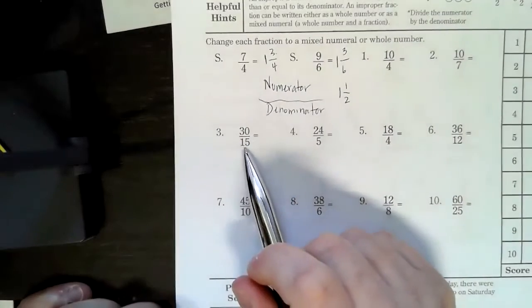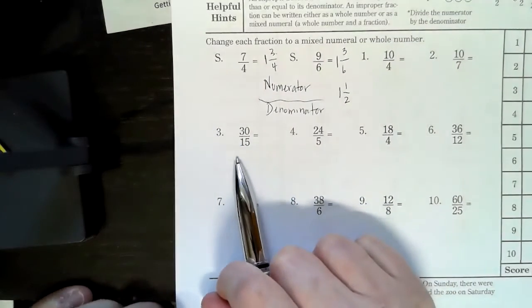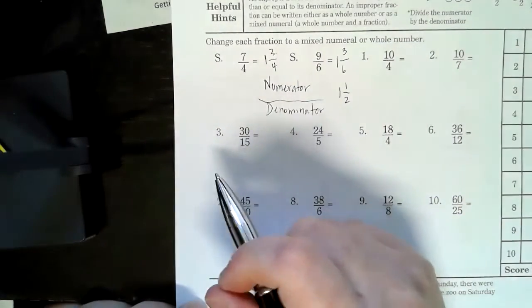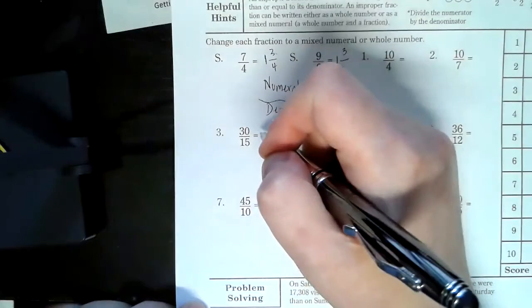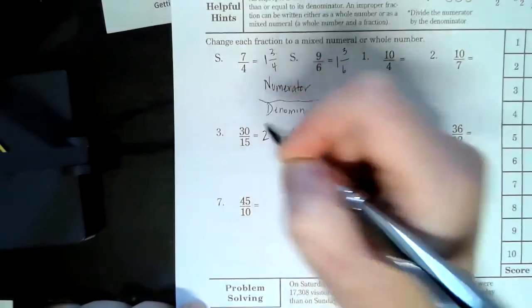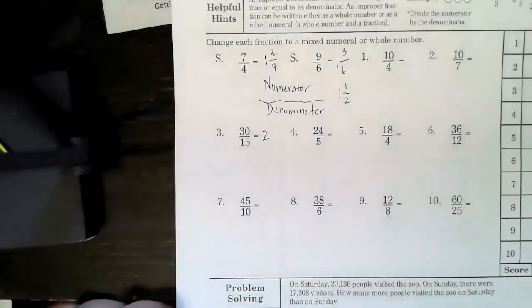And then let's do this one. This one's kind of fun. 30 divided by 15, 15 goes into 30 two times. There is no fraction, just a whole number.